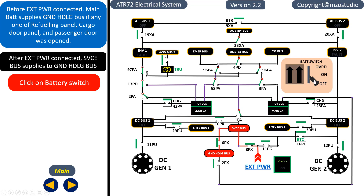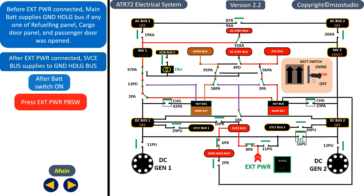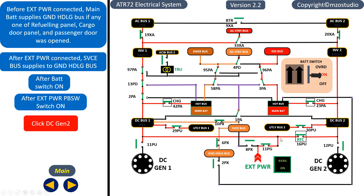Let's see the animation. In this condition, the DC standby bus essentially receives supply from the main battery. The main battery also supplies to bus tie 1, which in turn supplies to the ATR standby bus. Once the battery is supplying the buses, the available light comes on and we can switch on the standby power.